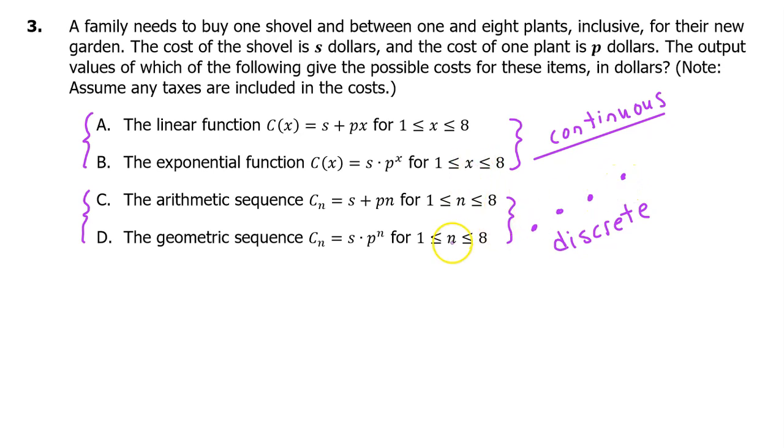The input variable, x or n, is going to have to represent the number of plants that we end up buying. And you can't buy fractions of a plant. It's either going to be one, two, three, four, five, six, seven, or eight. Nothing in between. So a discrete model of the kind that would be represented by a sequence would be best.